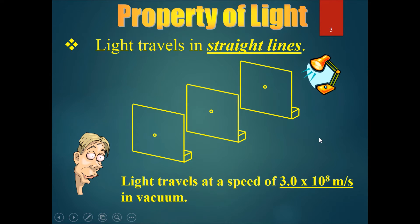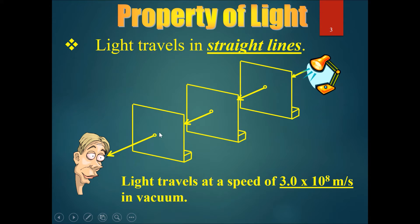The next property of light is that light travels in straight lines only. For example, if you place three cardboard pieces together and poke a hole in each cardboard, you would be able to send one stream of light from a light source through the holes to be seen by you.